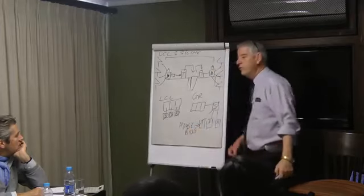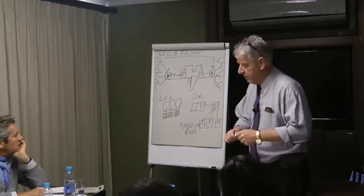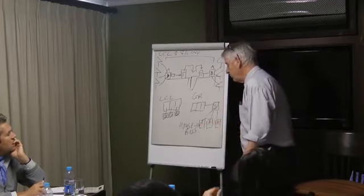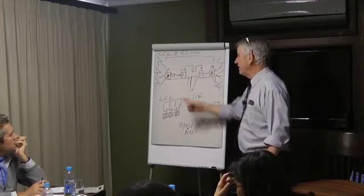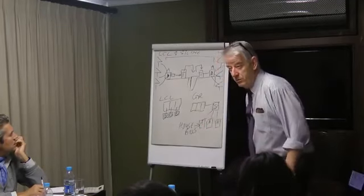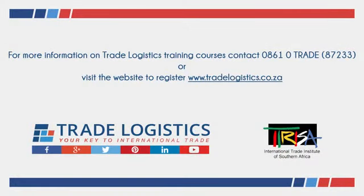So, when you do groupage, you have house bills issued by the agent. When you do LCL, you do not have house bulls.